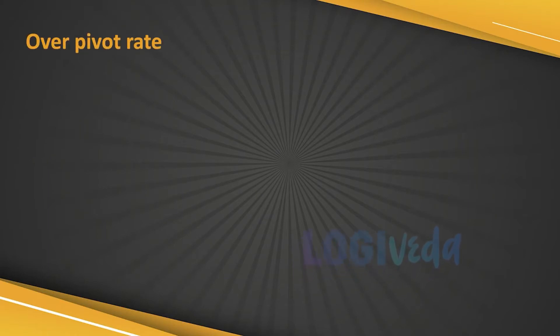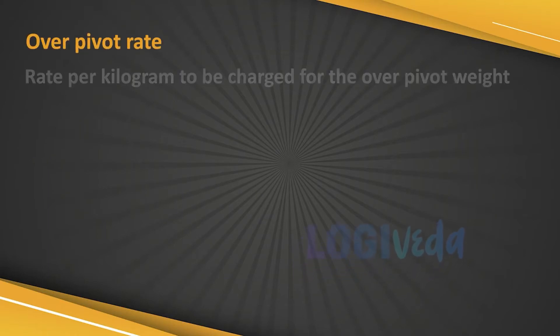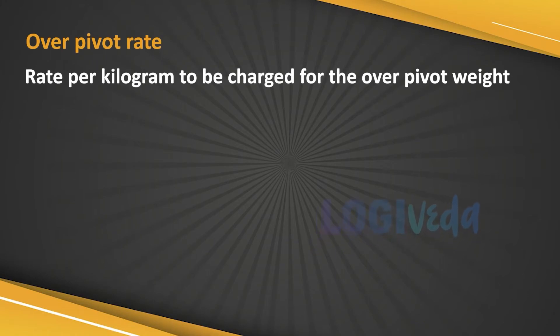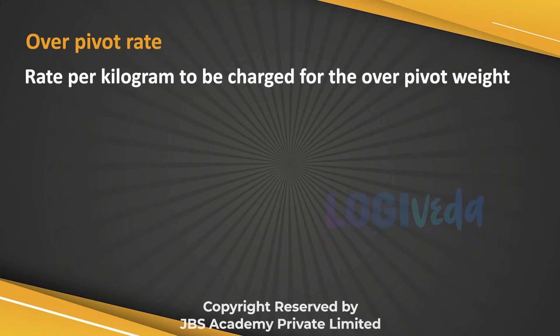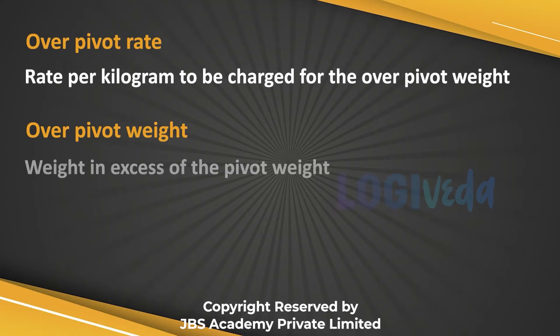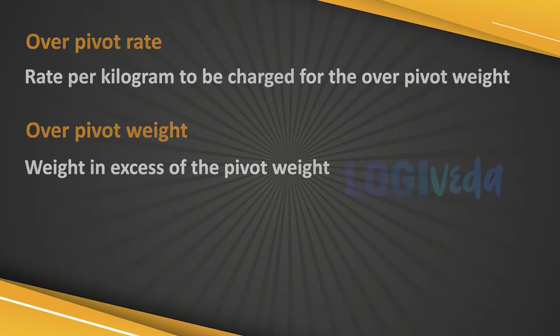Over pivot rate: the rate per kg to be charged for the over pivot weight. Over pivot weight: the weight in excess of the pivot weight.